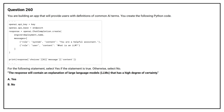Question number 260. You are building an app that will provide users with definitions of common AI terms. You create the following Python code. For the following statement, select yes if the statement is true, otherwise select no. The response will contain an explanation of large language models (LLMs) that has a high degree of certainty.